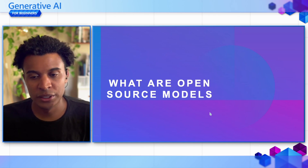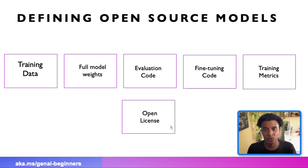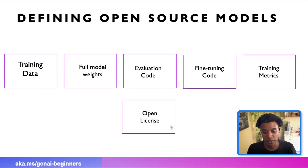So what exactly are open source models? The standard definition, translated from open source software, would put this category as all information being publicly available. When talking about large language models, this includes the training data being publicly available, the full model weights used for training, the evaluation code used to evaluate the training, fine-tuning the model, training metrics determined during that process, and most importantly, an open source license allowing developers to use it freely without restrictions. Only a few models currently fit all of these criteria perfectly.